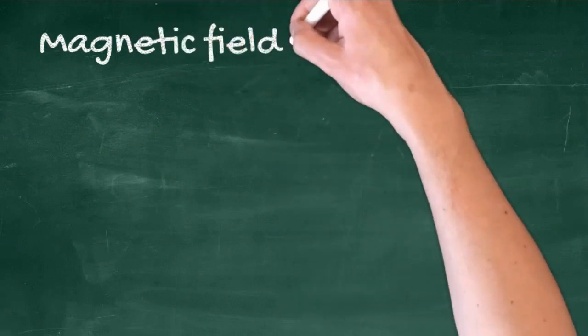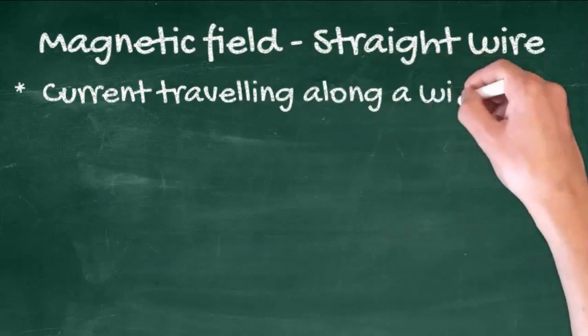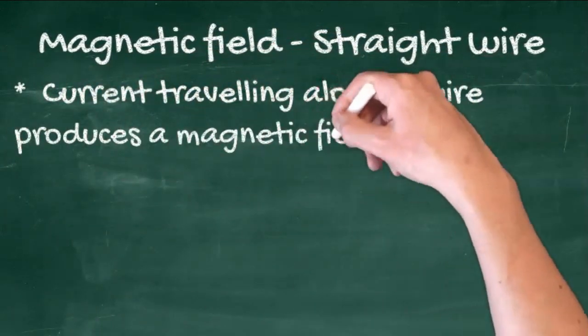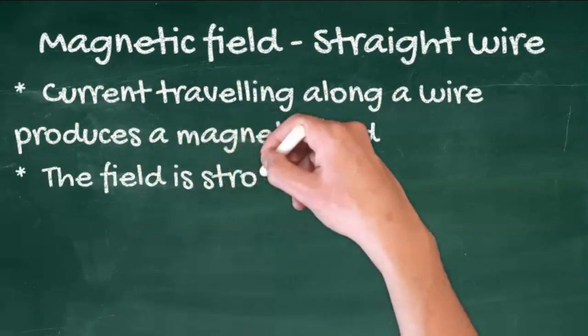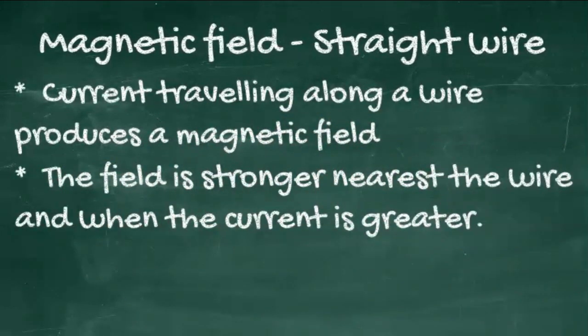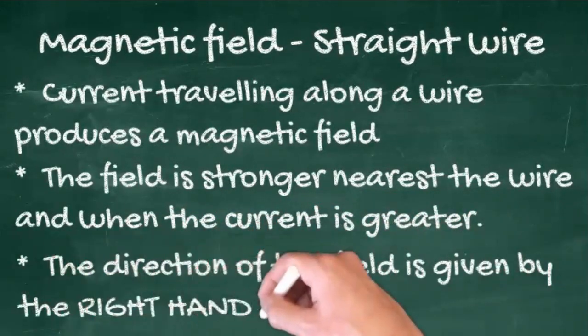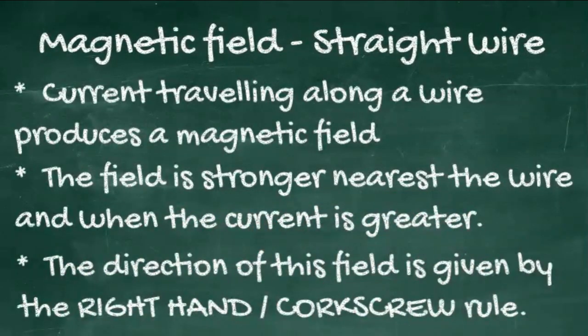There are also magnetic fields associated with the current flowing in a wire. Current travelling along a wire produces a magnetic field. The field is stronger nearest the wire and when the current is greater. The direction of this field is given by the right hand or corkscrew rule.